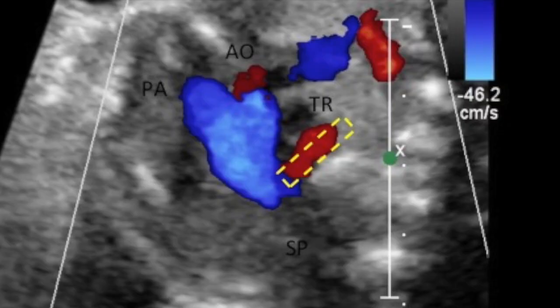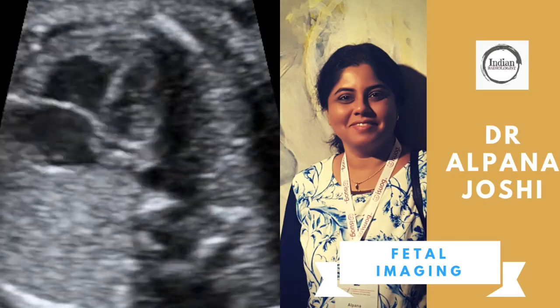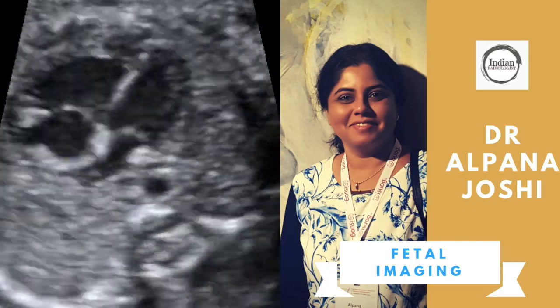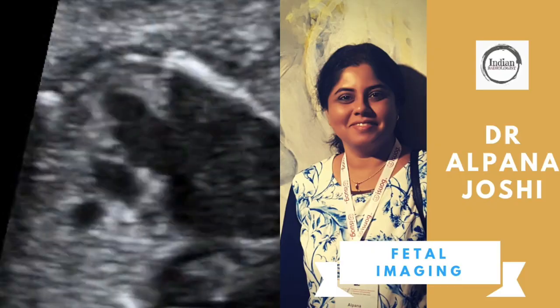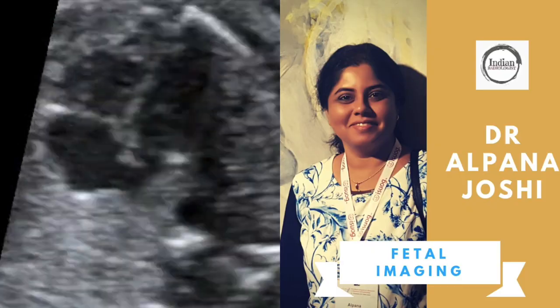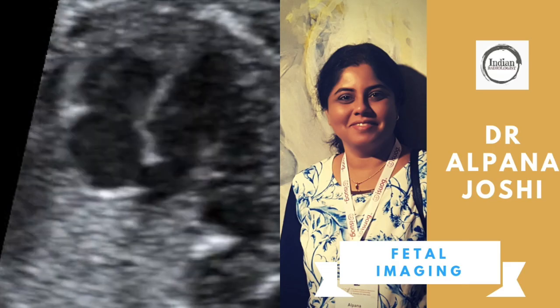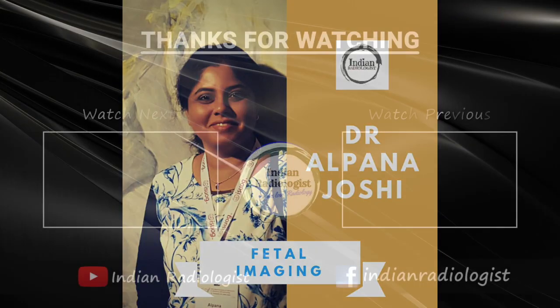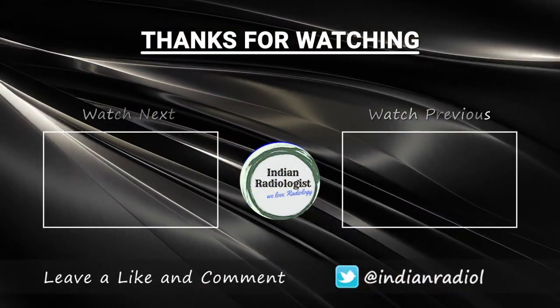The aberrant right subclavian artery: you can see the pulmonary artery, aorta, and ductus arteriosus to the left of the spine, but there is a vessel going behind the trachea — that is the aberrant right subclavian artery. This concludes our series of videos about fetal heart assessment during anomaly scan. The four chamber and three vessel trachea views are easy to obtain, and outflow tract views can be learned with practice.